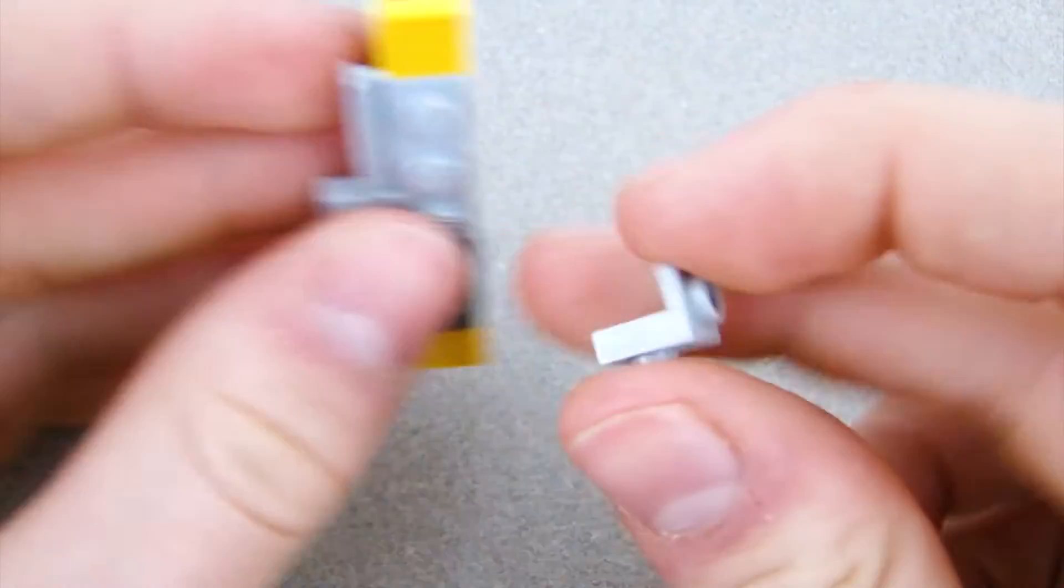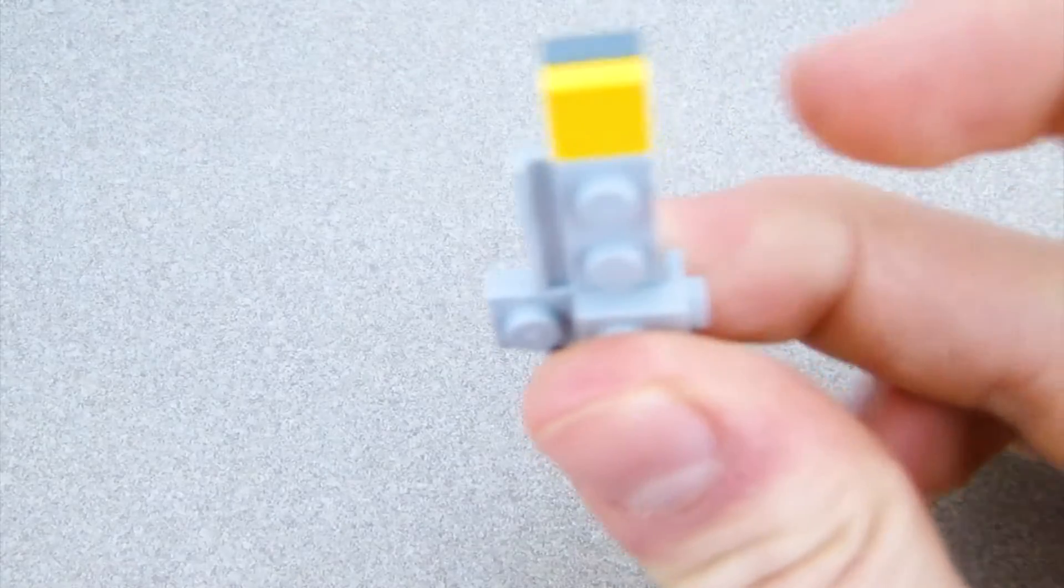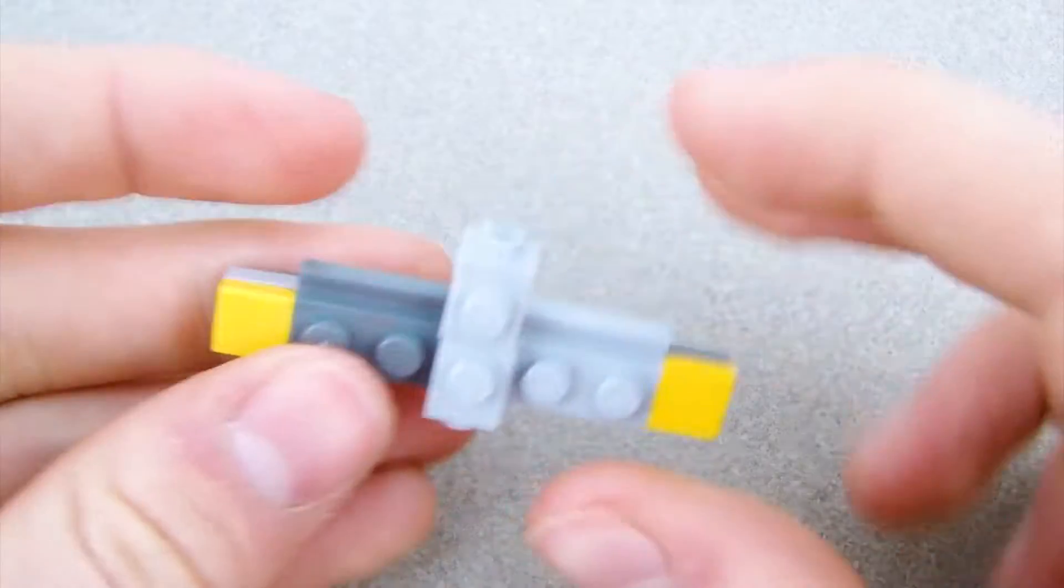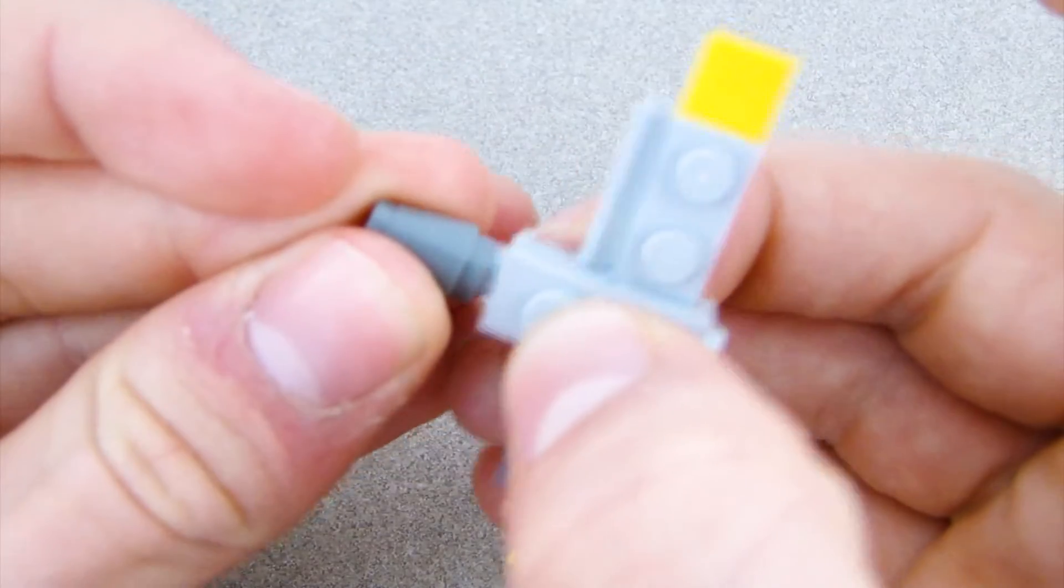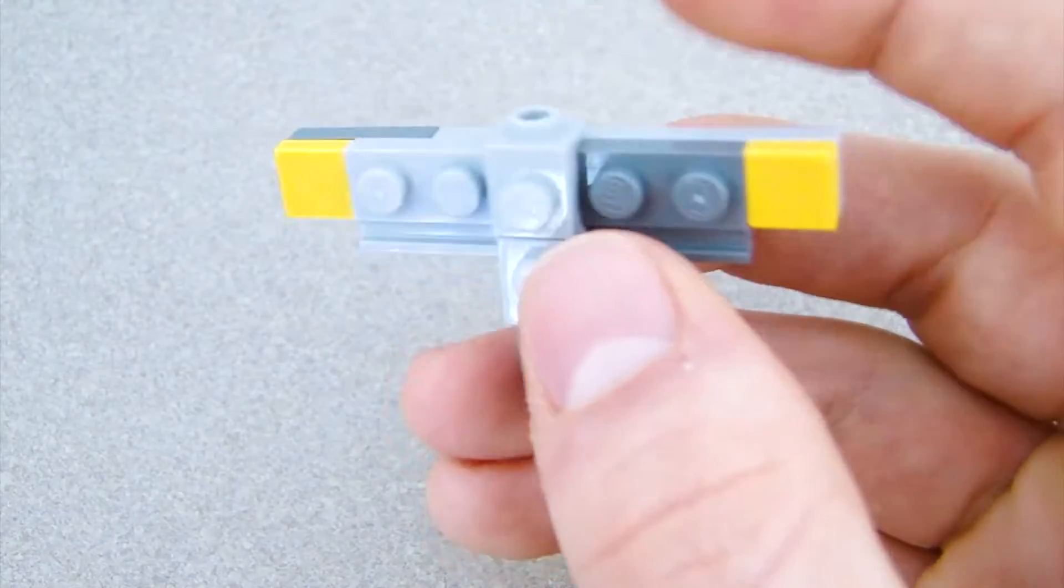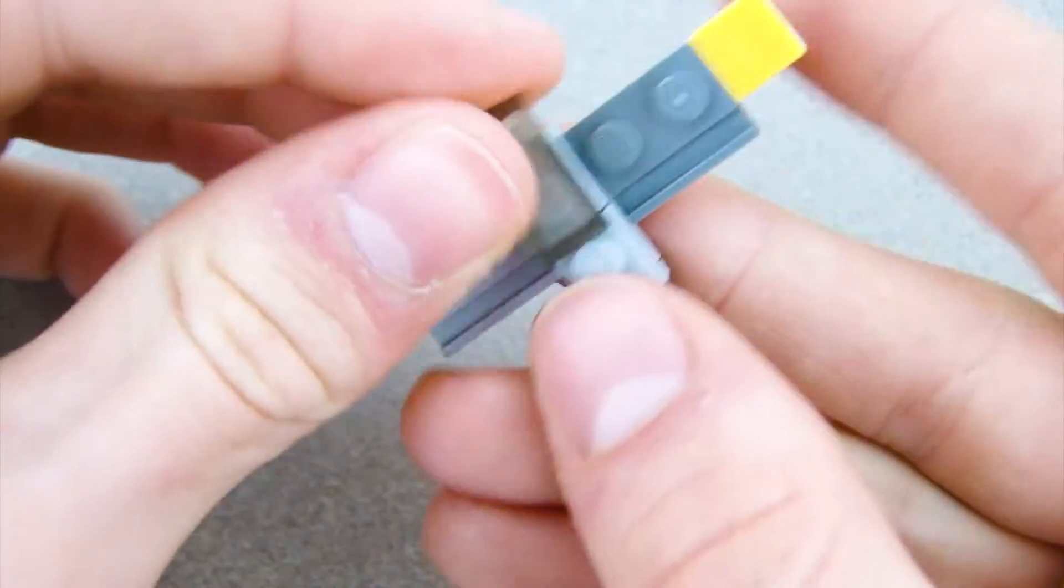So we got the wings done. Then get these pieces and put them on both sides of that 1x2 we just placed down. Then on this back one, you're going to want to put this cone piece. And on the top of this, put this little window piece.